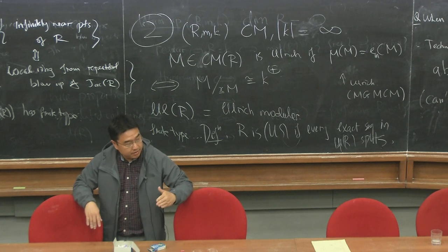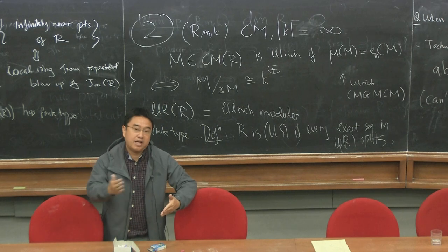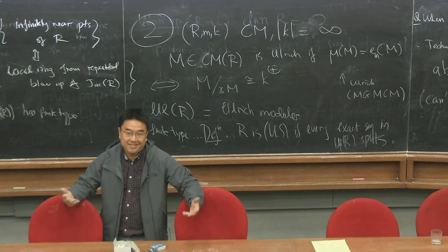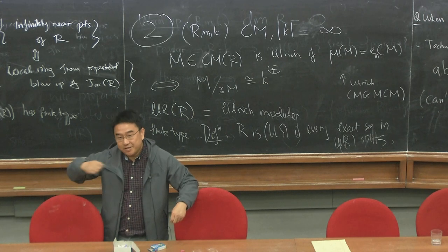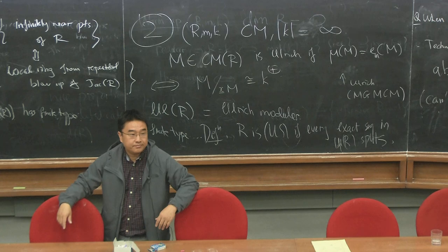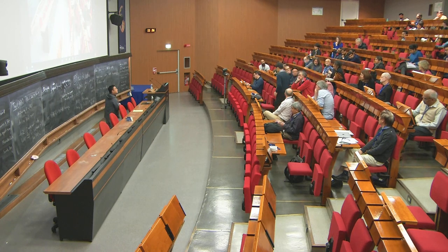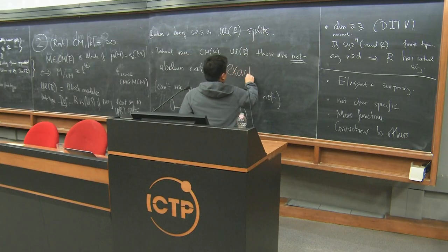Question: Can't you turn Eisenbud matrix factorization or their work with Peeva about complete intersection into a categorical characterization? For hypersurface case, there's a uniform bound, D plus one. But no such theorem exists for complete intersection. There's no uniform bound for when you need how many syzygies.